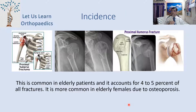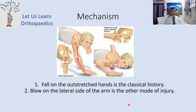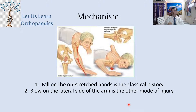This fracture is common in elderly patients and accounts for 4-5% of all fractures. It is more common in elderly females due to osteoporosis. A fall on an outstretched hand is a typical classical mechanism, as seen in the diagram. Another mechanism is a blow on the lateral side of the arm.